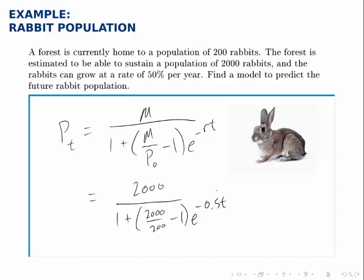Filling in all the pieces, this is what the model looks like, and the one simple step we'll do is to simplify the parentheses in the denominator. 2,000 divided by 200 is 10, and that minus 1 is 9.